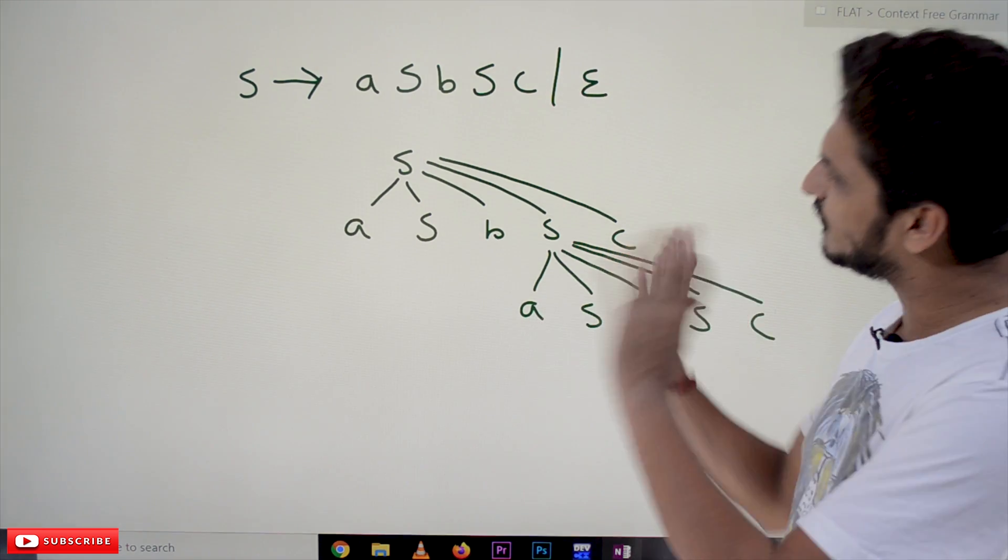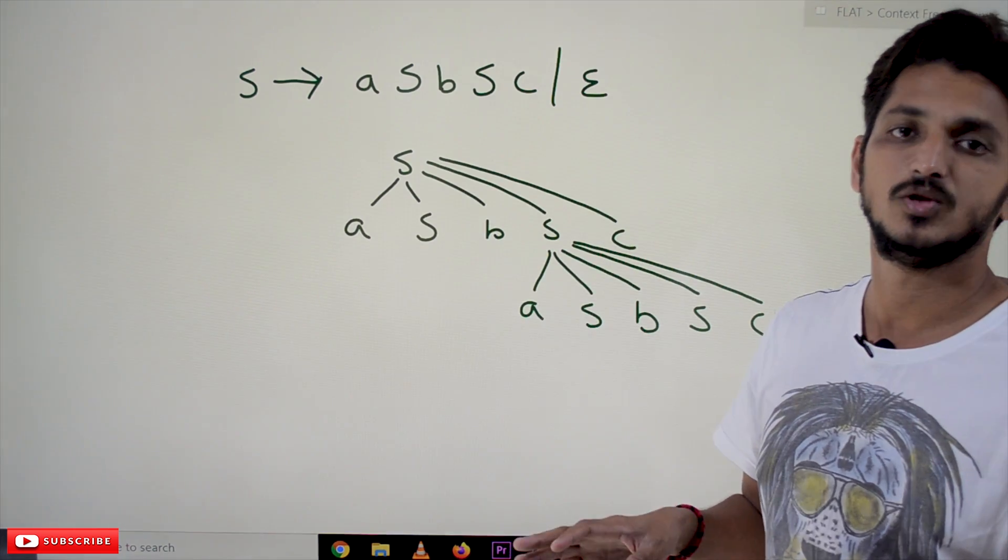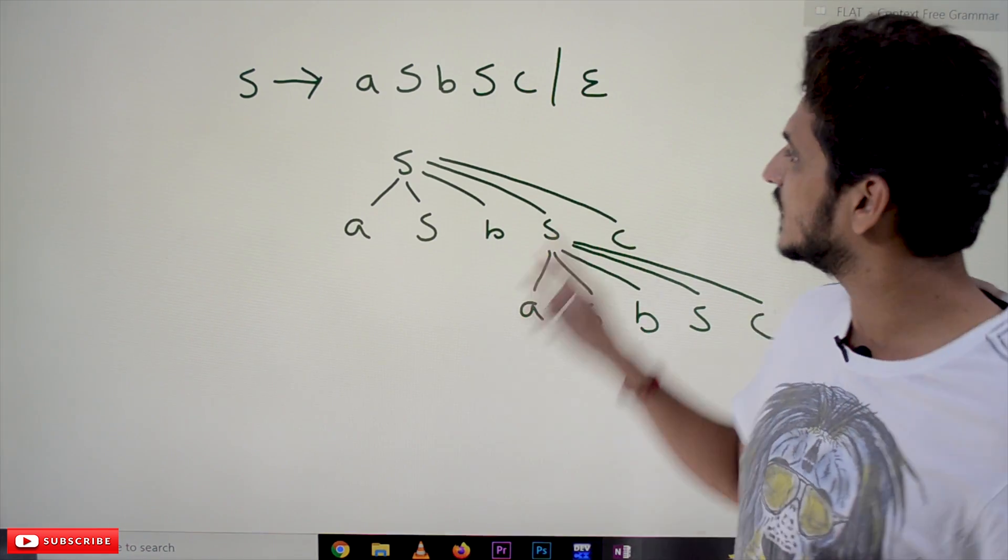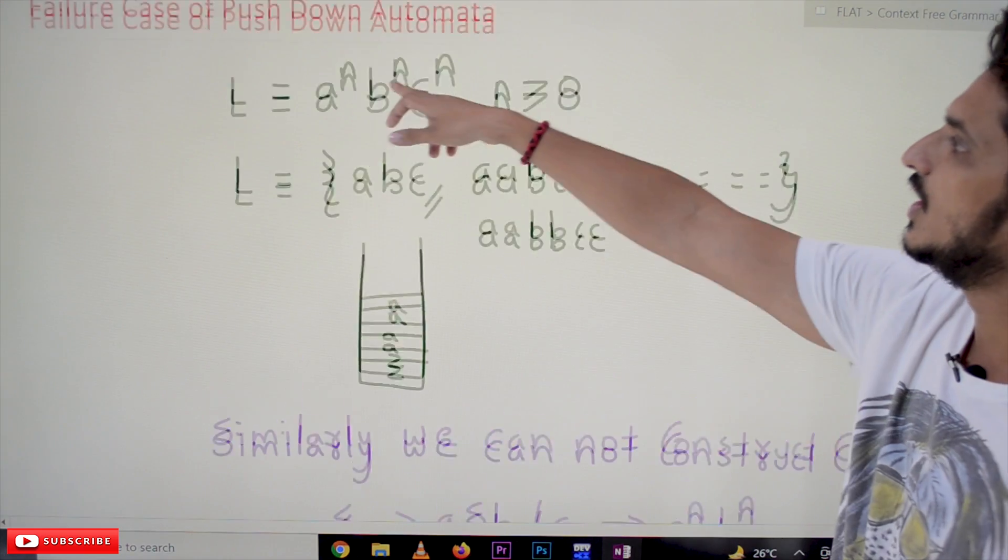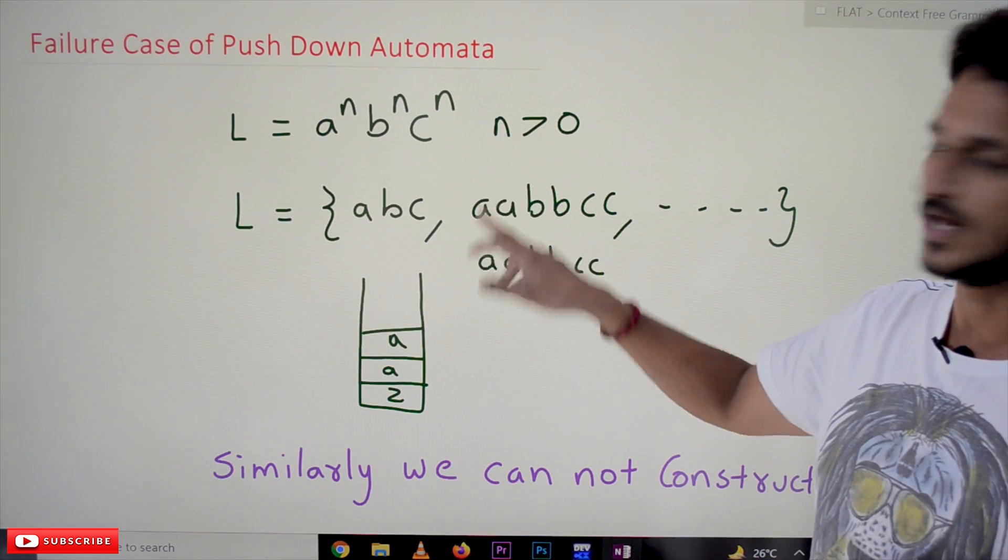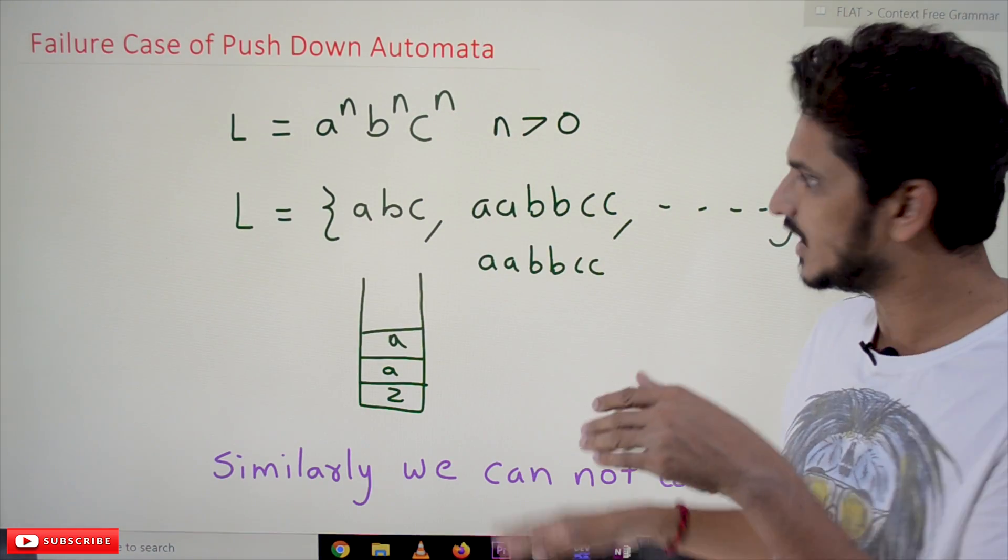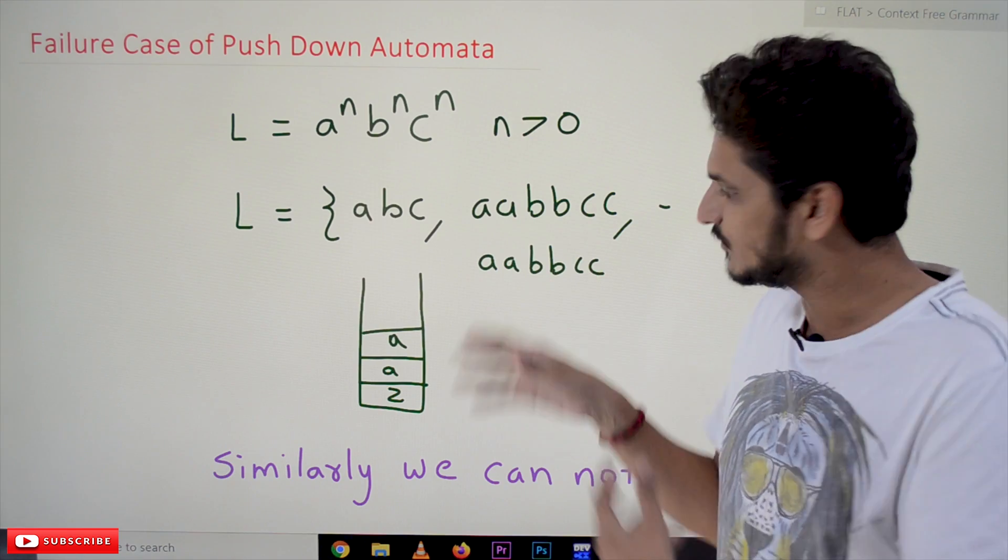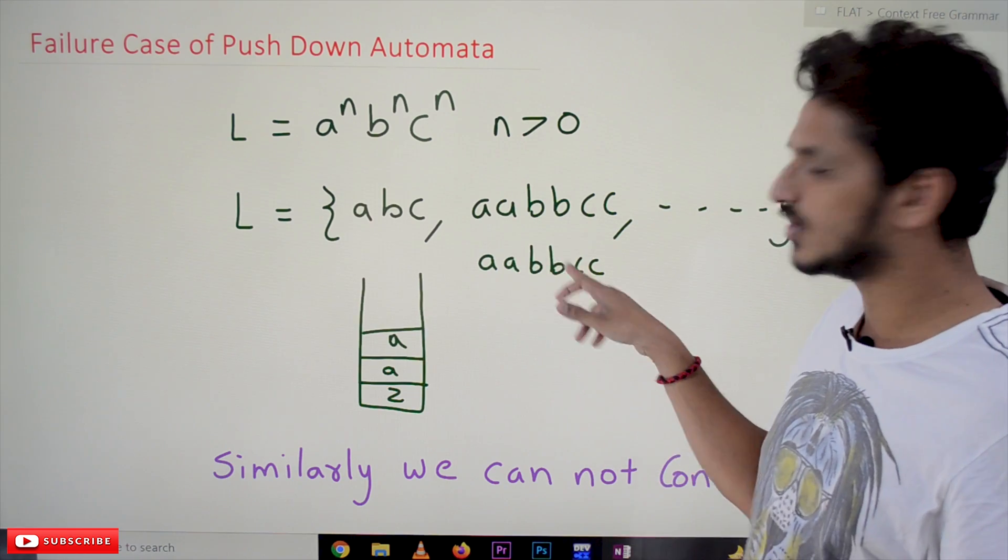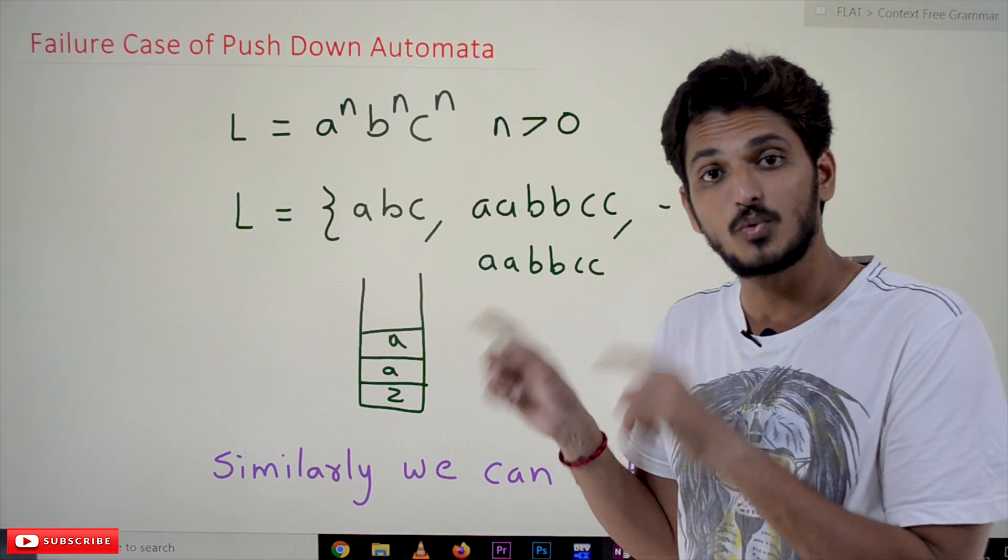You try to write in any different possibilities of CFG. You cannot construct CFG for the language L equals a^n b^n c^n. The point you have to understand: we can do the equality check for only two symbols, not three symbols. Not three symbols.